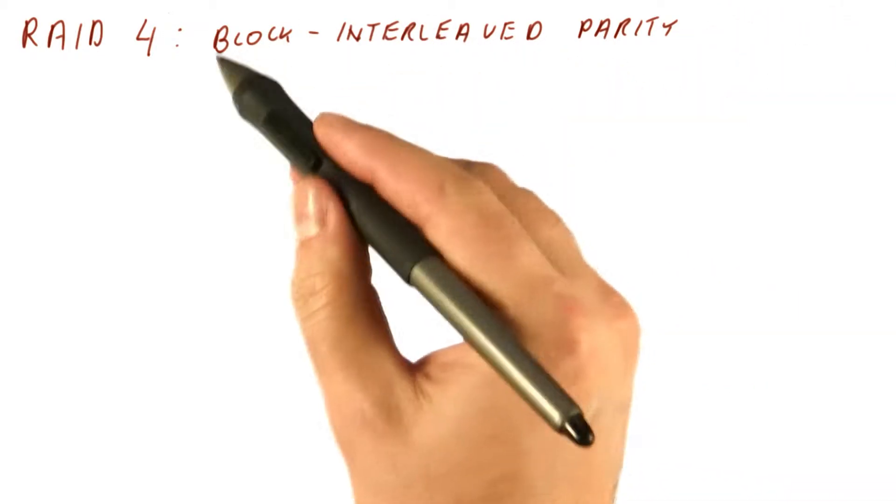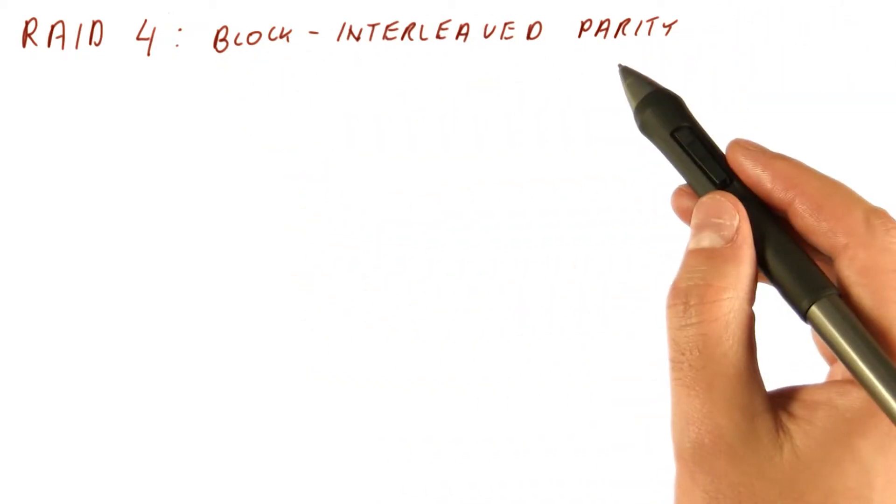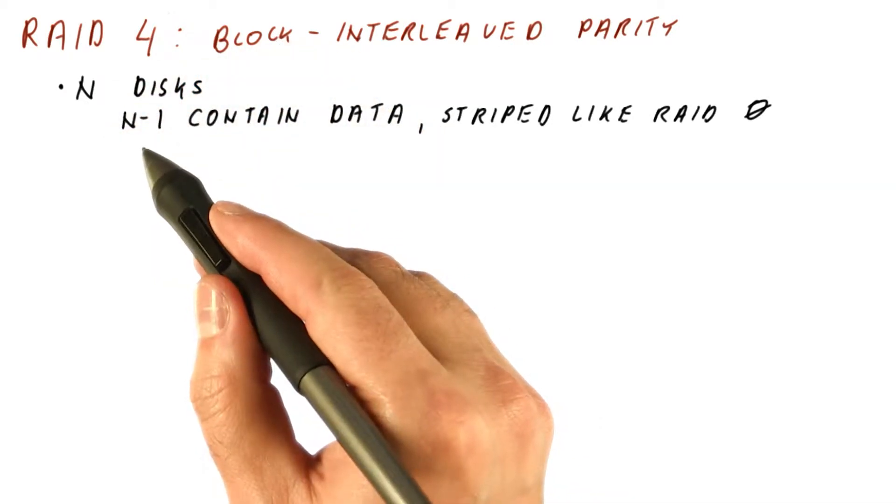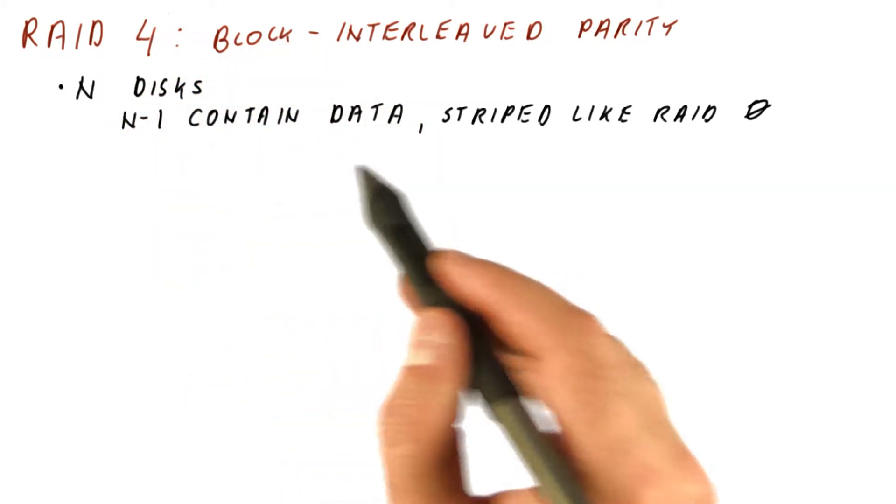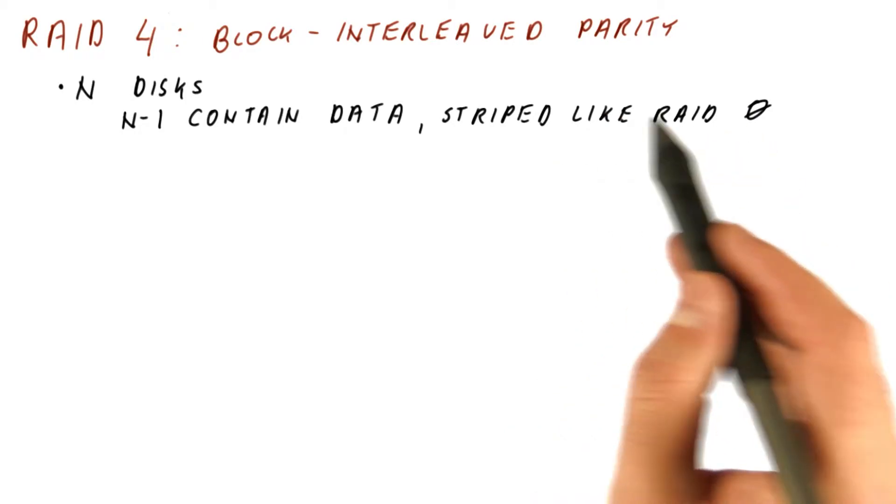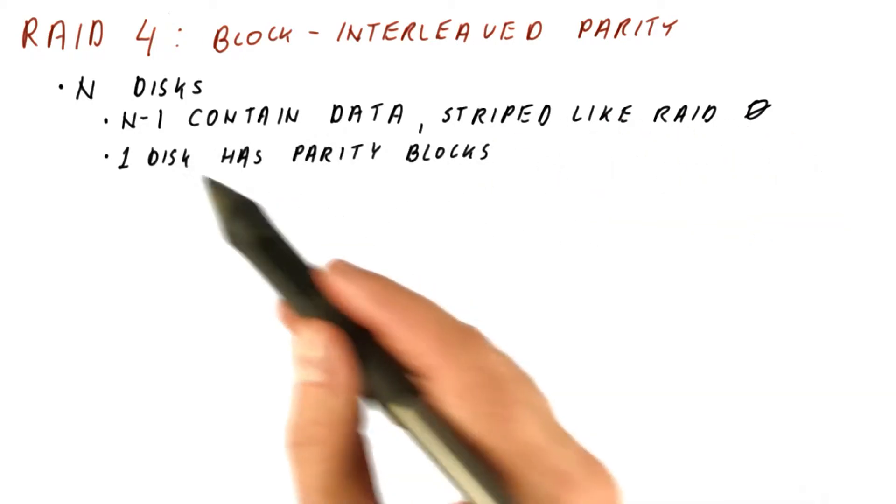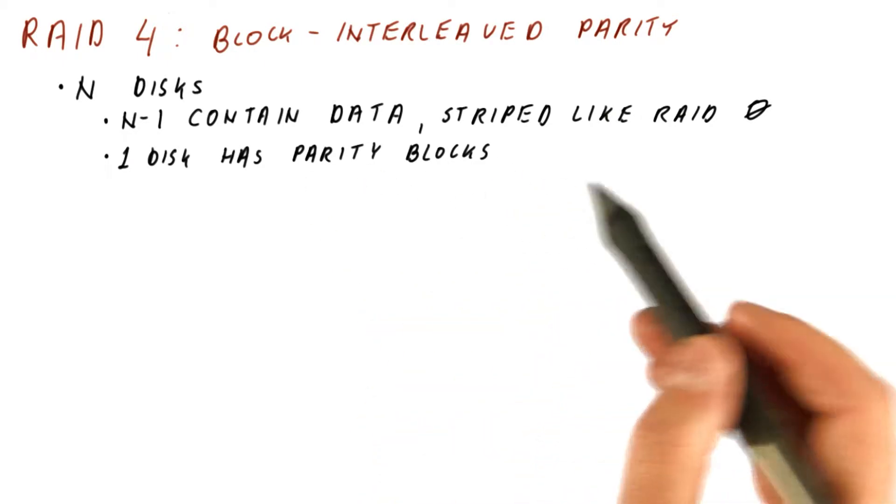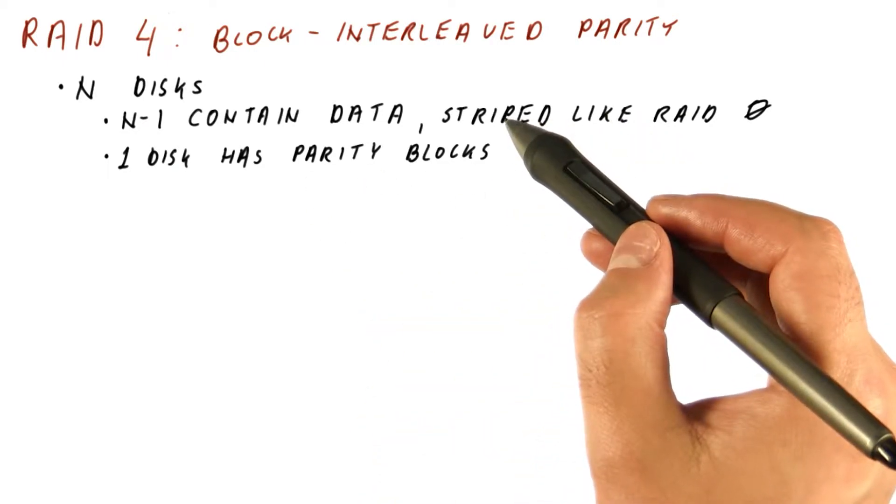RAID 4 uses a technique called block interleaved parity. It uses N disks. N minus one, all but one of these disks contain data, which is striped across these disks just like in RAID 0. And then the last disk has the parity blocks that protect all of the blocks of the N minus one disks.